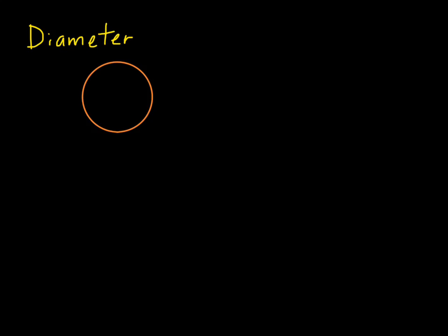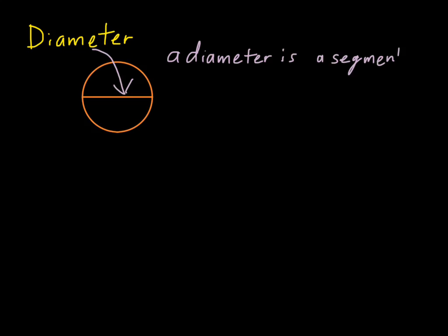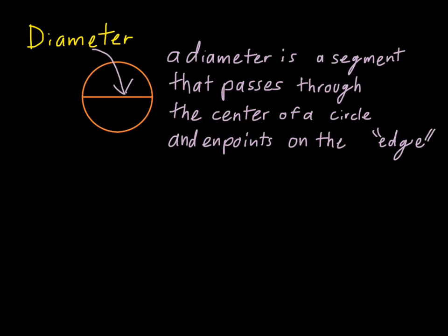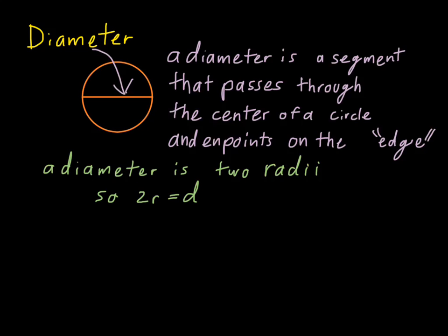The next concept is the diameter of a circle. A diameter goes from one edge of the circle all the way across to the other edge, and it goes right through the center. So a diameter is a segment that passes through the center of a circle and has its endpoints on the edge. A diameter is actually two radii — not radiuses, that's improper. It's called radii. Two times the length of the radius equals the length of the diameter.